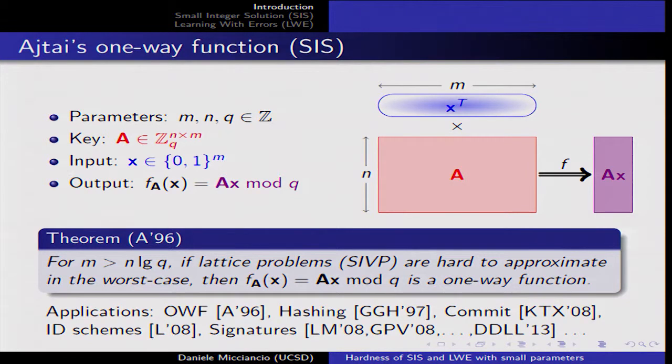In a remarkable result, Ajtai proved that this function, for appropriate ranges of parameters that make the function compress its input, is hard to invert. It has been the basis for many important applications ranging from hash functions to identification schemes and digital signatures, and you will hear more about signatures in this same session.